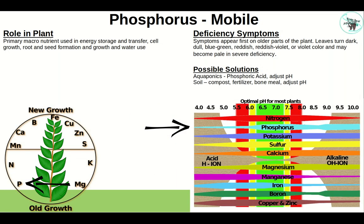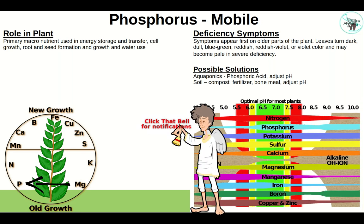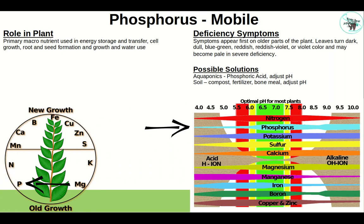Phosphorus is a mobile primary nutrient used in energy storage and transfer, cell growth, root and seed formation, growth, and water use. Symptoms first appear in older leaves, which turn dark blue-green, reddish, red, or violet in color, becoming pale in severe deficiencies. In aquaponics, use phosphoric acid with caution and adjust pH. In soil: compost, fertilizer, and bone meal, which contains a lot of phosphorus. Anything below pH 6.4 or above 7.5 reduces phosphorus availability.